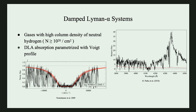People usually use Voigt profile fitting to model those DLAs. The Lyman-Alpha Forest can be used as a biased matter tracer to detect the baryon acoustic oscillation signal in the early universe, and DLAs play a very important role in the Lyman-Alpha BAO analysis. So it is very important to have a very good DLA catalog.